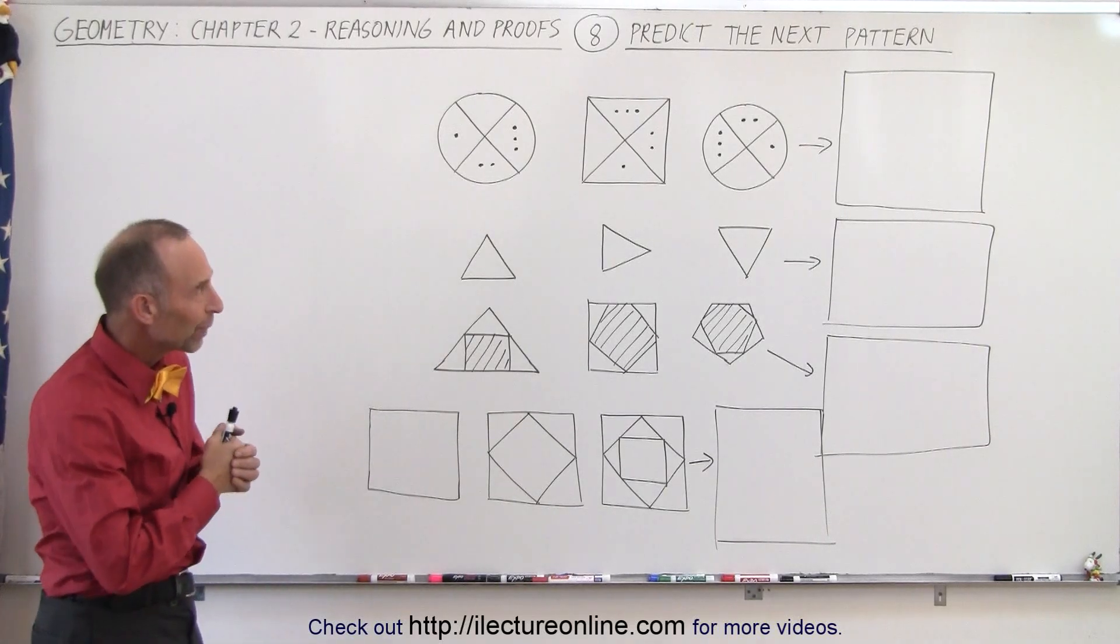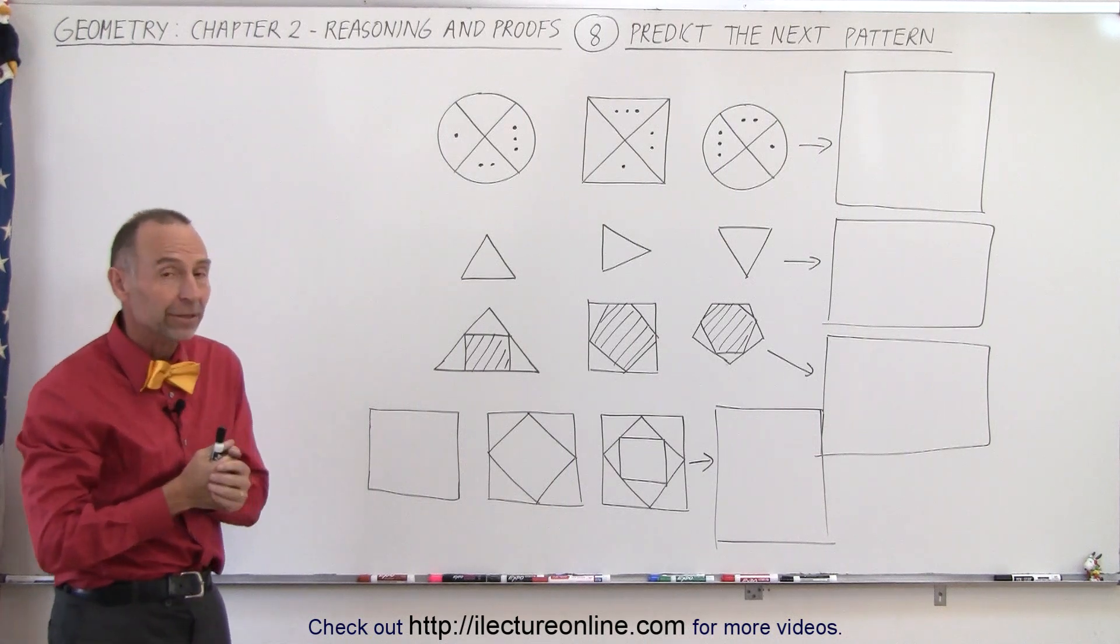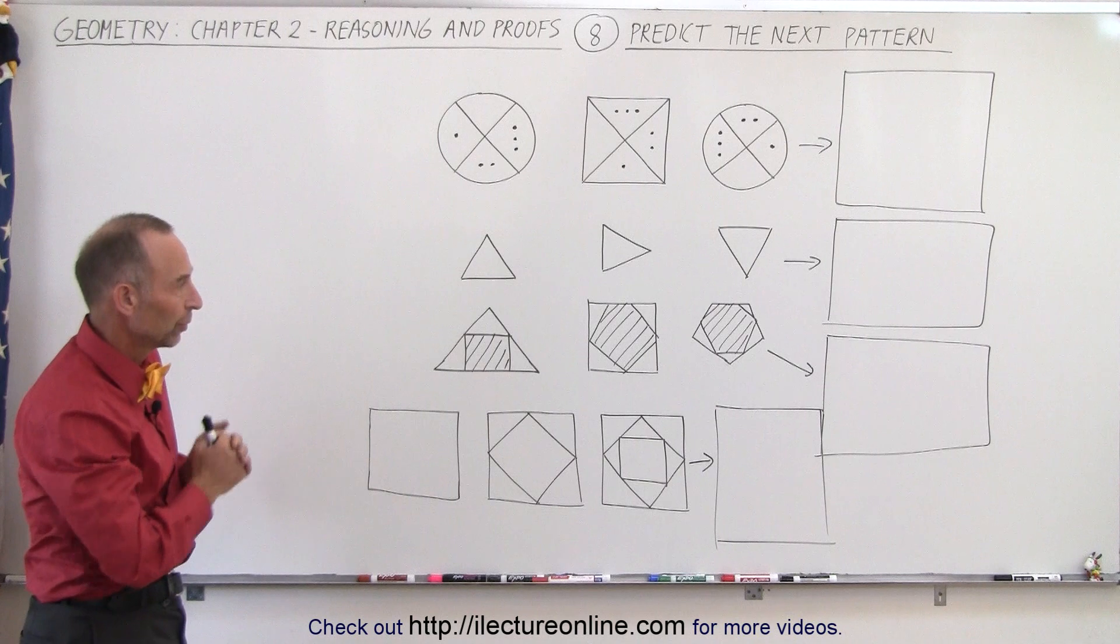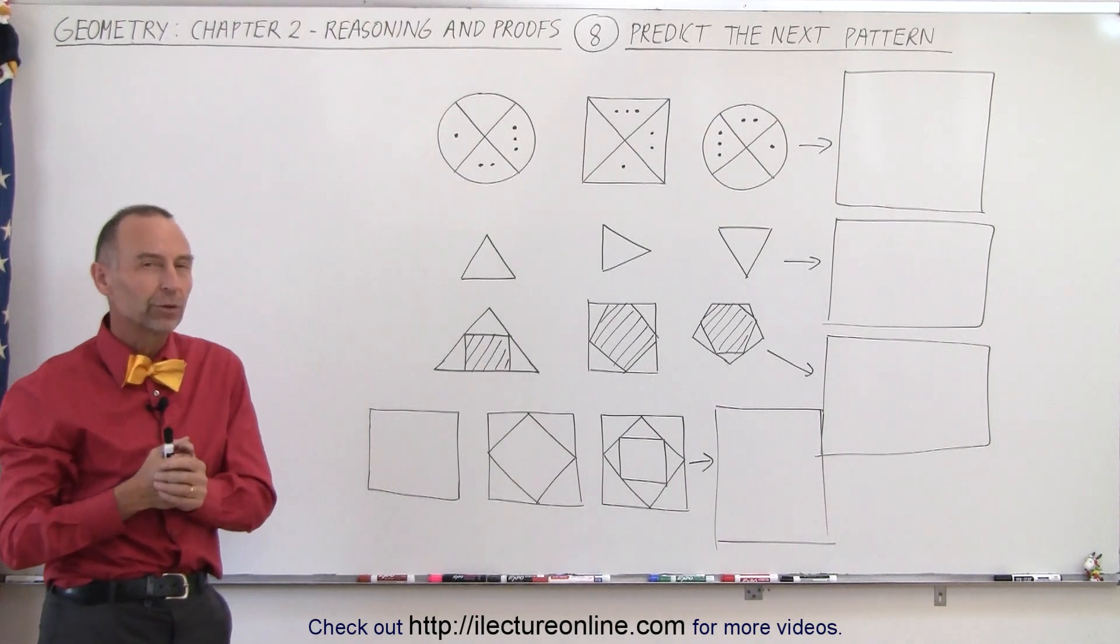Welcome to our lecture online. Here we have some more figures that give us a particular pattern and we're supposed to get the next one in that pattern. So in each case we were given three figures. What is the fourth one going to look like?